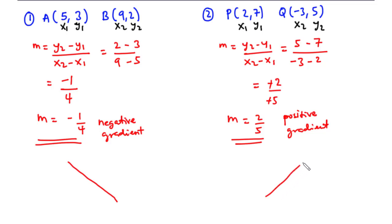For a negative gradient, the straight line is downhill in direction from left to right. For a positive gradient, the straight line is uphill from left to right. Now let's talk about collinear points. Three or more points are said to be collinear if they lie on the same straight line. Given three or more points on the same line, the gradient between any two pairs of points will be equal, and those points are described as collinear.